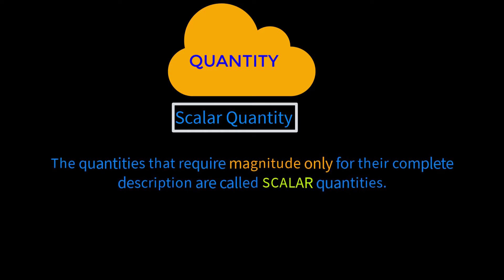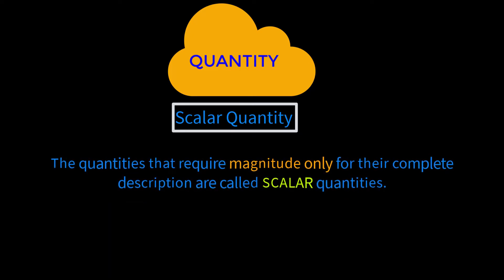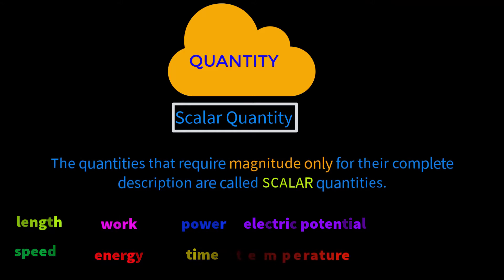Suppose if I ask you to tell me your mass, certainly you will not say that your mass is 60 kg West or 70 kg North. You will say that your mass is only 60 kg or only 70 kg. To express your mass, only magnitude is needed. Therefore, mass is a scalar quantity. In mathematics and physics we will get many quantities like this.